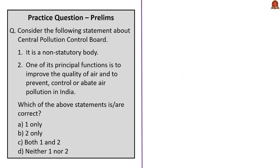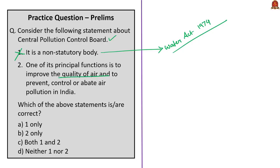This question is with respect to the Central Pollution Control Board. The first statement: it is a non-statutory body. This is wrong — the Central Pollution Control Board is a statutory body constituted under the Water Act of 1974. The second statement: one of its principal functions is to improve air quality and prevent, control, and abate air pollution in India — correct, based on the Air Act of 1981. Only the second statement is correct — answer is option B: two only.